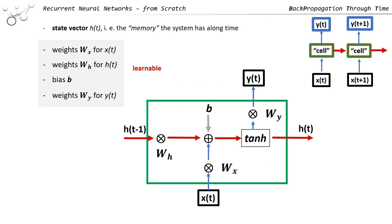Let us take a look at the RNN cell again. We have these different learnables: the weights Wx, Wh, the bias, and also Wy for our output. We use this cell recursively, so we have an input xt, and it generates an output yt. It also passes information to the next time step using the state vector h.